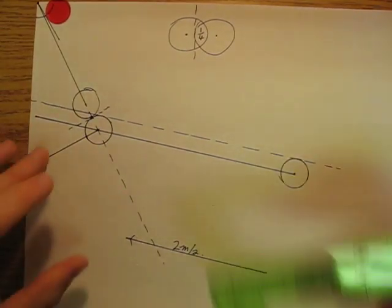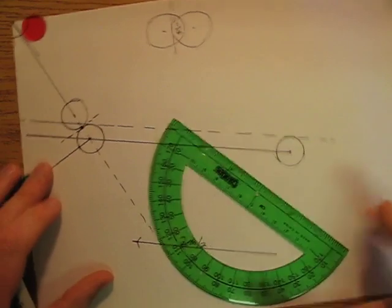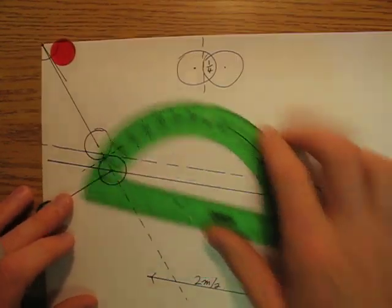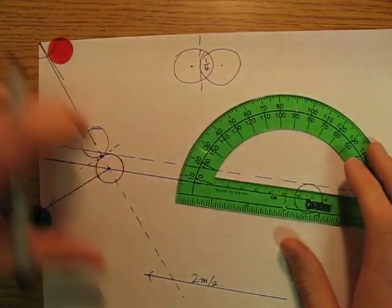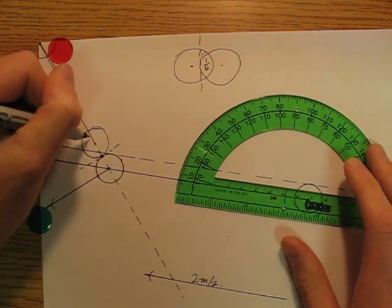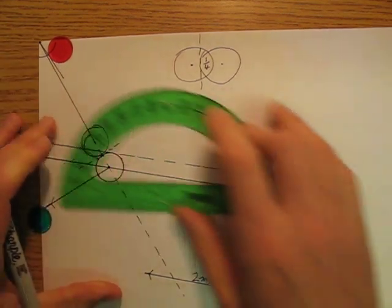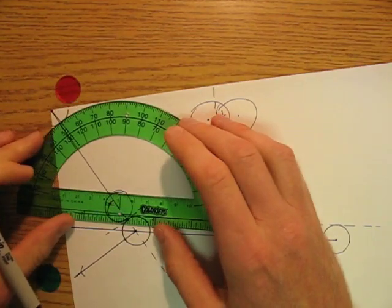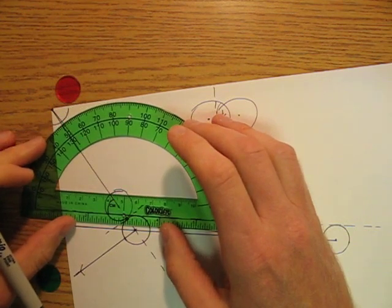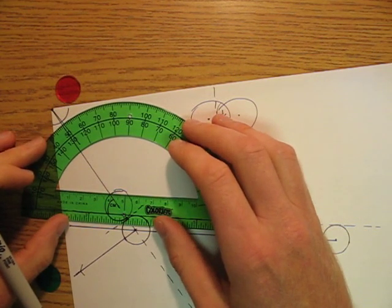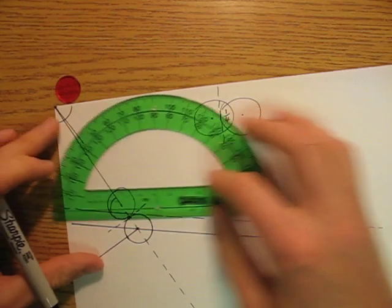Now, I want to know what this angle is, I want to know what that angle is. So, I'm going to measure that angle, and that angle I'm going to measure to be approximately 50 degrees.